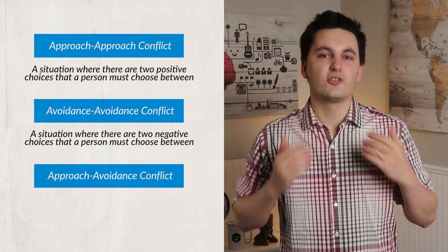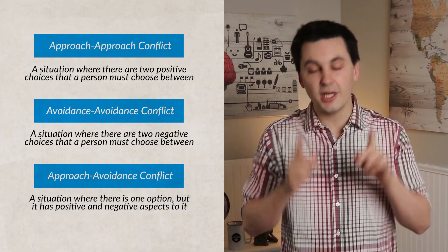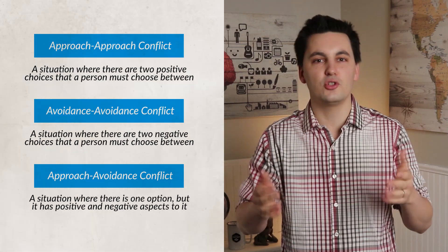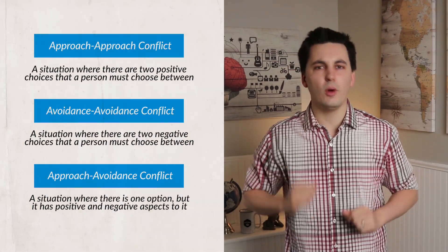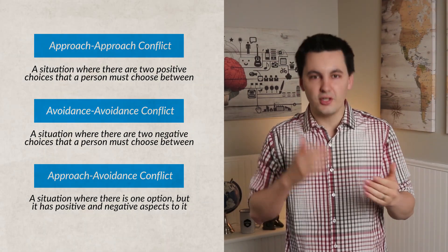The third is approach-avoidance conflict. This happens when there is only one goal, but it has both positive and negative aspects to it — there is not one good or one bad option, but one outcome with both positive and negative aspects. For example, if you found your dream house but it costs more than you wanted to spend, you have to choose to either buy it or keep looking. If you buy it, you have that perfect house, but you ended up spending more than you wanted to.